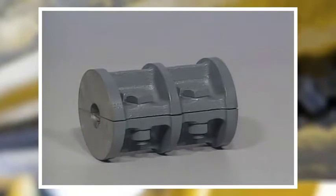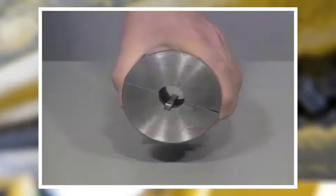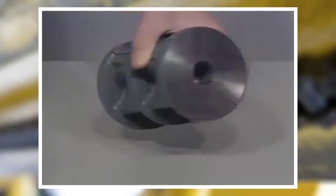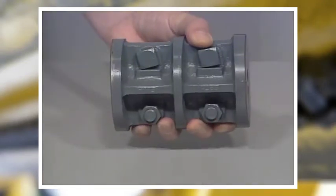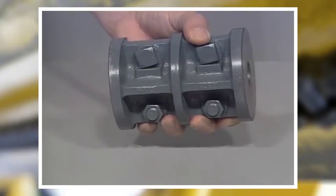Another type of rigid coupling is the split sleeve coupling. This coupling is designed so that the two shafts don't have to be moved to connect them into the coupling. It is split down the middle so the two sides can come together around the shafts.